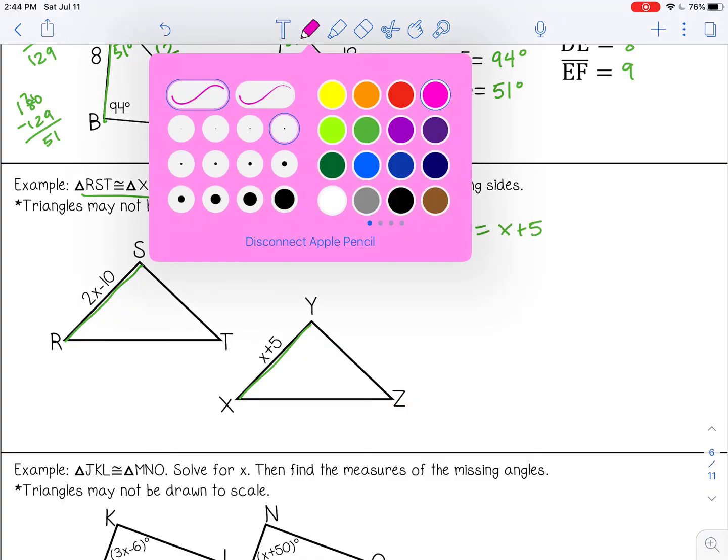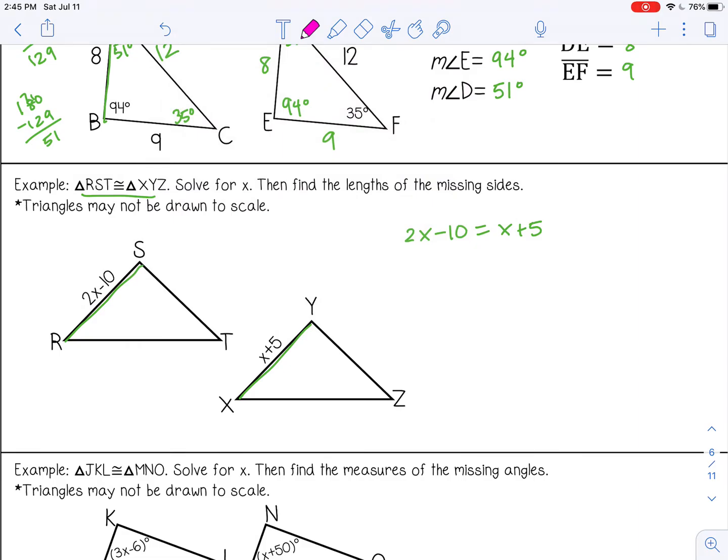We'll solve this like a normal equation. I'm going to start by subtracting x from both sides. X minus x is 0. 2x minus x is x. Then I want to isolate the variable, so I'll add 10 to both sides. Negative 10 plus 10 is 0. X equals 15.